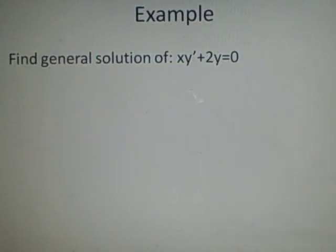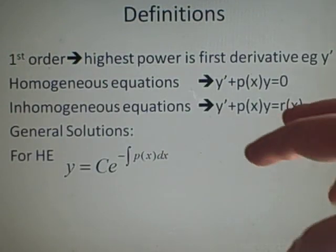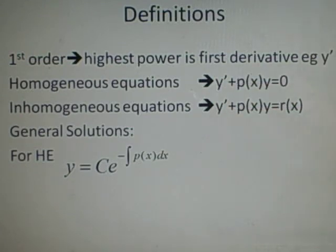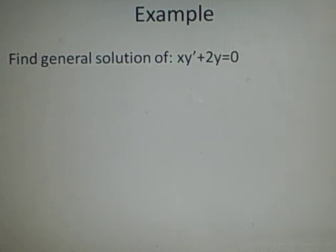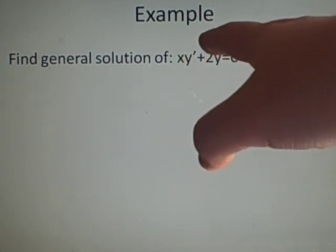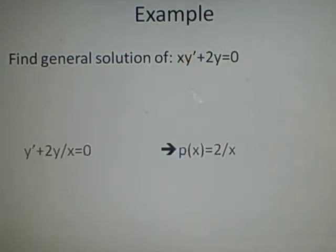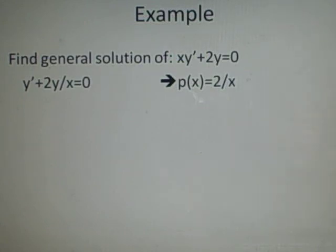Right, and we've got an example of a homogeneous equation. Find the general solution of xy prime plus 2y equals 0. We want it into a form like this first, though. So, we've got y prime, here we've got xy prime, so we divide everything by x, so we have y prime plus 2y over x. And this gives us our p of x, which is 2 over x.